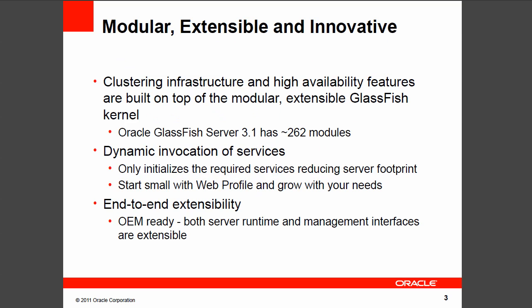GlassFish 3.1 is one of the most innovative modular application servers out there today. The new clustering and high availability features for the 3.1 release are built on top of the modular v3 kernel. The whole server is comprised of about 262 modules. The server is very intelligent about initializing its services dynamically when needed, which reduces the overall server footprint.